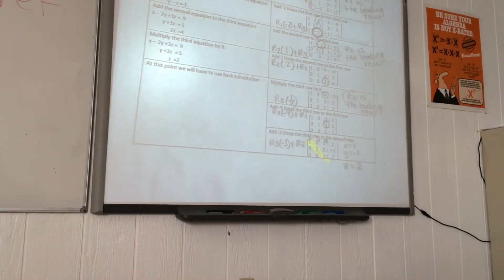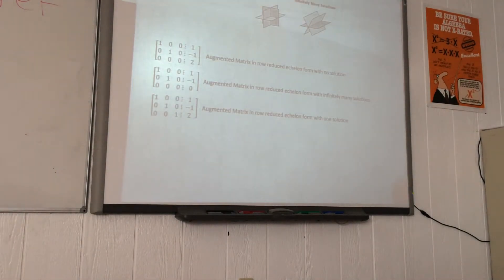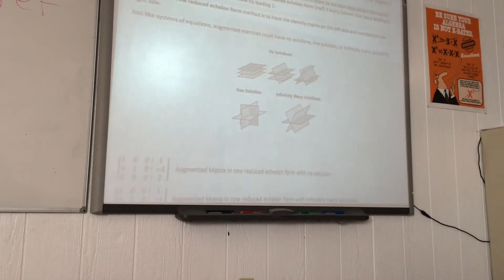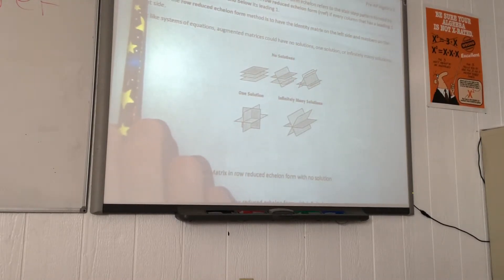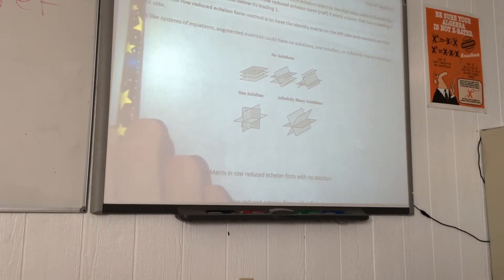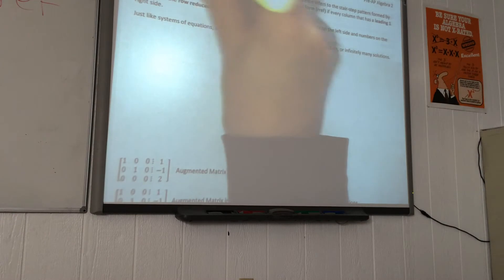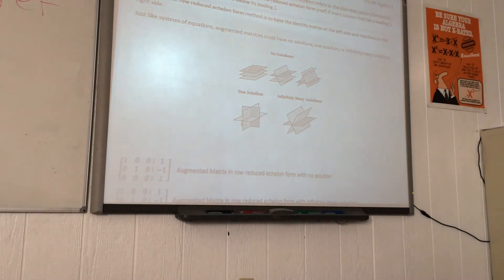Now let's look at the back side of your handout. We're going to go over some concepts, and then I will show you how to do this on the calculator. Could you please read the next statement? The last matrix is said to be in row-reduced echelon form. The term echelon refers to the stair-step pattern formed by the non-zero elements of the matrix. A matrix is in row-reduced echelon form, RREF, if every column that has a leading 1 has 0s in every position above and below its leading 1.